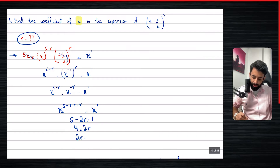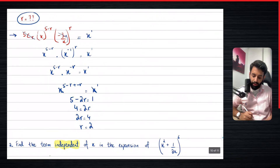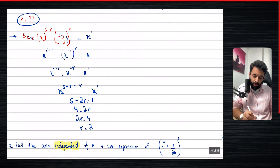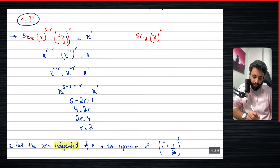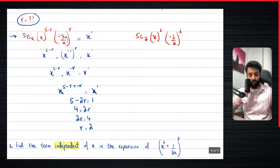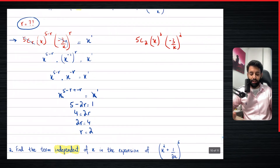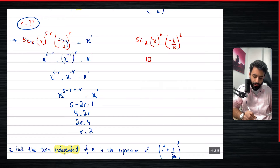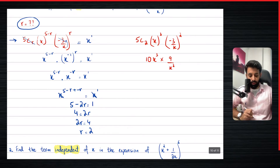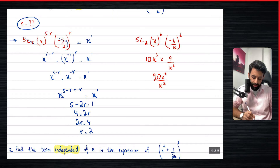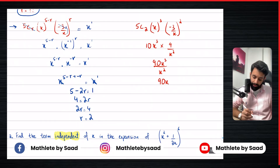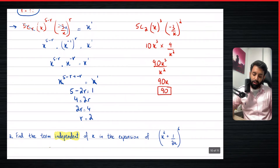Solving 5 − 2r = 1 gives 2r = 4, so r = 2. Now we plug r = 2 back into the formula: 5C2 · x^(5−2) · (−3/x)^2. This gives 5C2 · x³ · (9/x²). Since 5C2 = 10, we get 10 · 9 · x³/x², which equals 90x³/x² = 90x.